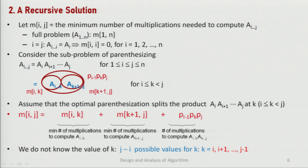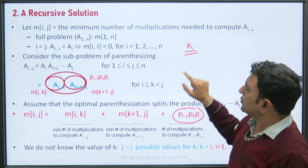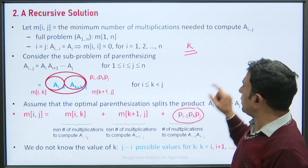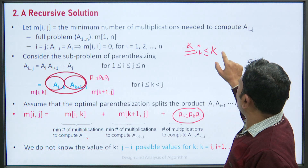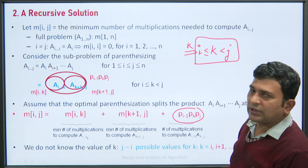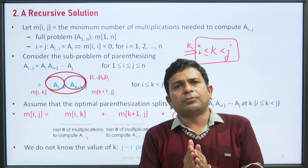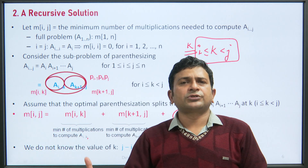M[i][k] is the minimum number of multiplications to compute the sequence A_{i..k}, M[k+1][j] is the cost for A_{k+1..j}, and P_{i-1}·P_k·P_j is the cost of multiplying the two resultant single matrices. The possible value of k satisfies i ≤ k < j. This is the split point through which we divide a sequence of matrices into two sub-sequences.